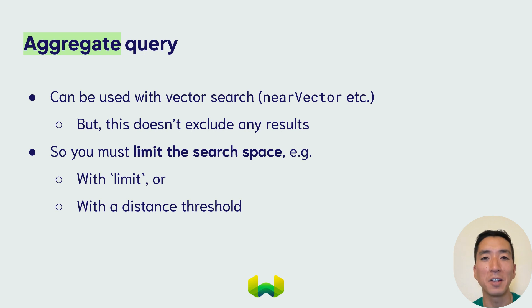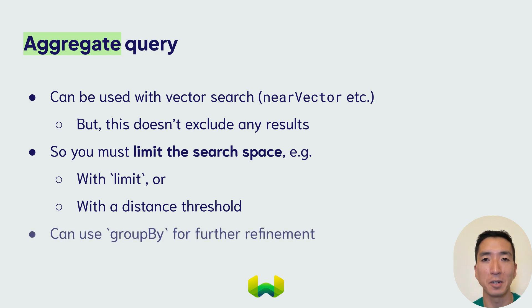To further refine your aggregate queries, you can use the group by argument. This allows you to compile information from multiple subsets of results based on specified properties.